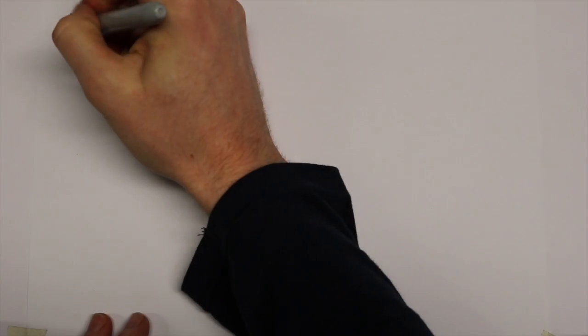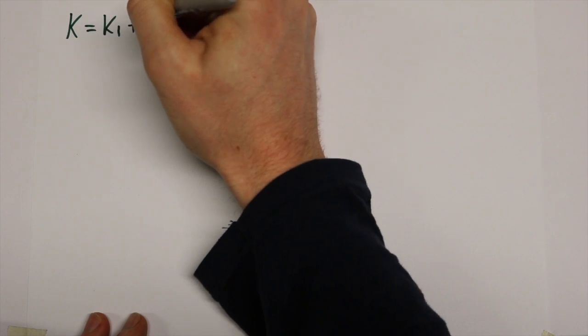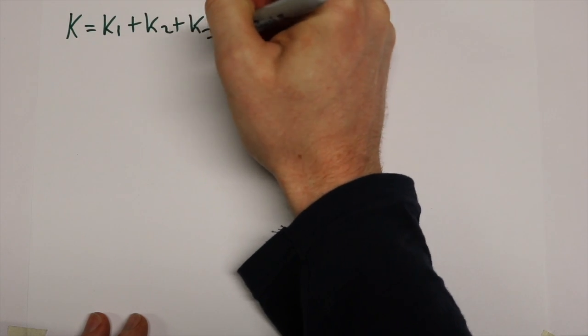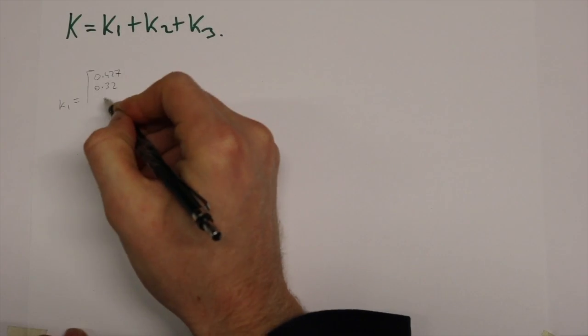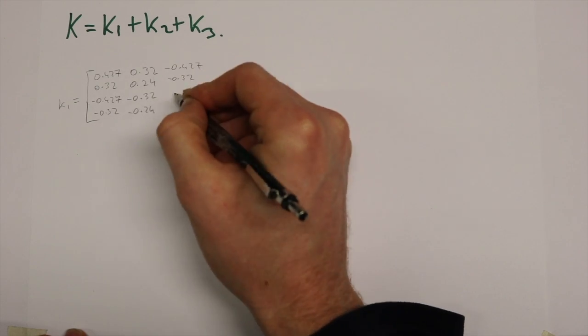To create the structure stiffness matrix, all we do is add all three matrices together. This is done by addition of their common degrees of freedom.